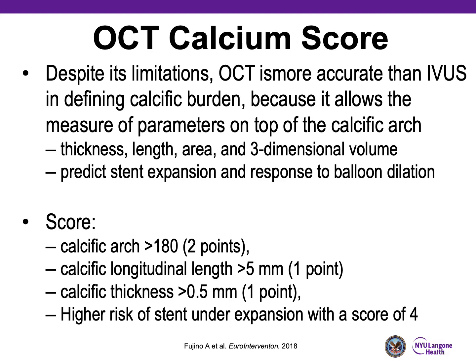Despite its limitations, OCT is more accurate than IVUS in defining calcific burden because it allows measurement of parameters on top of the calcific arc — you can look at thickness, length, area, and calculate three-dimensional volume. It predicts stent expansion in response to balloon dilation in small imaging studies. There is a scoring system: calcific arc greater than 180 degrees, calcific longitudinal length greater than five millimeters, and calcific thickness greater than 0.5 millimeters are all important parameters, with higher scores indicating higher risk of stent under-expansion.